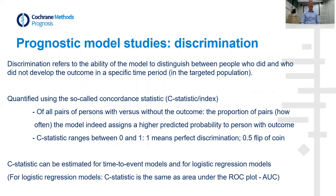Discrimination of a prognostic model refers to the ability of the model to distinguish between people with the outcome versus people without the outcome, in the specific time period in the targeted population. Discrimination is typically quantified using the C statistic. Its formal meaning is that, of all pairs in the dataset of persons with versus without the outcome, the C statistic reflects the proportion of pairs that the model indeed assigns a higher predictive probability to the person with the outcome. The C statistic ranges between 0 and 1; a value of 0.5 means the model is as good as flipping a coin, and a value of 1 means perfect discrimination. For logistic regression prediction models, the C statistic is exactly the same as the area under the receiver operating characteristic (ROC) curve.